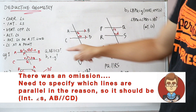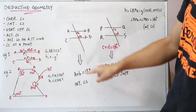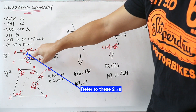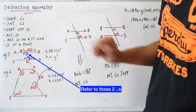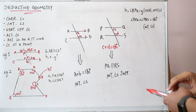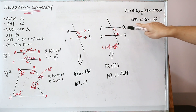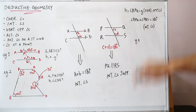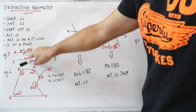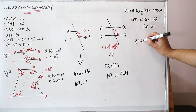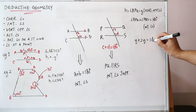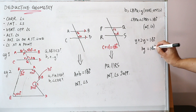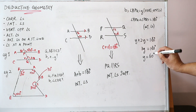From part A, we already know AB and CD are parallel. So angle BPQ plus angle PQD equals 180 degrees. Substituting, Y plus 2Y equals 180 degrees, so 3Y equals 180 degrees, giving Y equals 60 degrees.